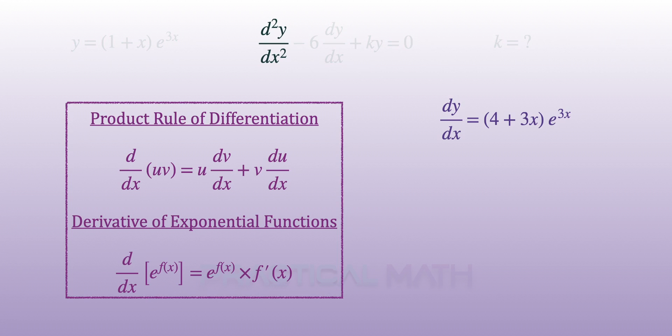We'll continue with the second derivative of y by applying the product rule to our first derivative. Let's start by writing down u, in this case, 4 plus 3x, and we'll differentiate v. In this case, differentiate e to the power of 3x will give a result of 3e to the power of 3x, after applying derivative of exponential functions.